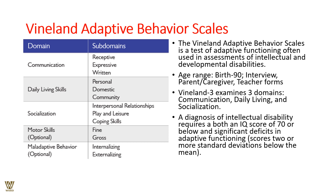The Vineland Adaptive Behavior Scales assess communication — understanding, expressing, and writing — from birth to age 90, via interviews with parents, caregivers, or teachers. Vineland-3 examines three domains: communication; daily living skills including personal, domestic, and community functioning; and socialization including interpersonal relations, play and leisure, and coping skills. Diagnosis of intellectual disability requires both an IQ score of 70 or below and significant deficits in adaptive functioning — two or more standard deviations below average.